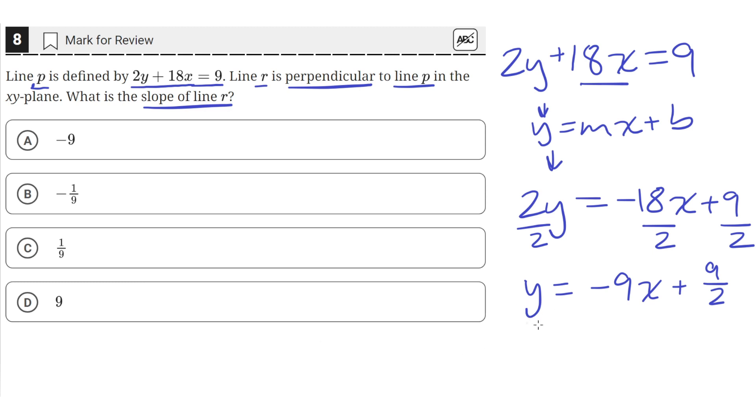So this is the y equals mx plus b form of line P. Line R is perpendicular to line P, which means the slope of line R is going to be the negative reciprocal of the slope of line P.